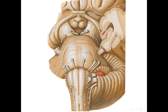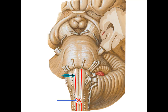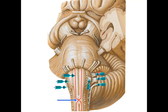In the medulla: three elevations — the pyramid, the olive, and the inferior cerebellar peduncle; three fissures — the median fissure, pre-olivary fissure, and post-olivary fissure. The pyramid contains the corticospinal tract, which crosses to the opposite side in the lower part of the medulla, forming the pyramidal decussation. The inferior cerebellar peduncle connects the medulla with the cerebellum. The last four cranial nerves exit from the medulla: the hypoglossal nerve exits from the pre-olivary fissure; the glossopharyngeal, vagus, and cranial accessory exit from the post-olivary fissure.